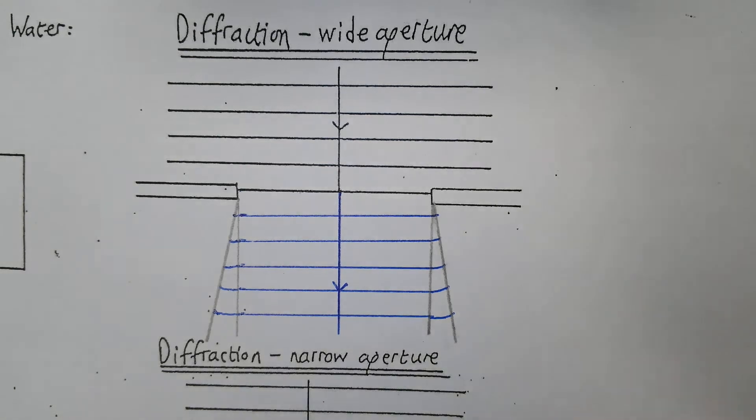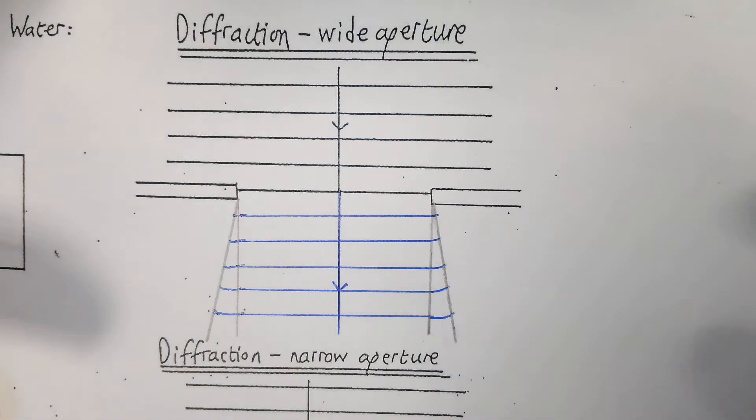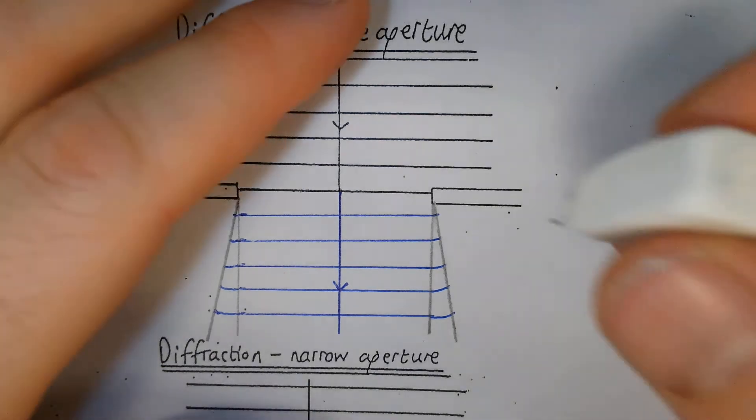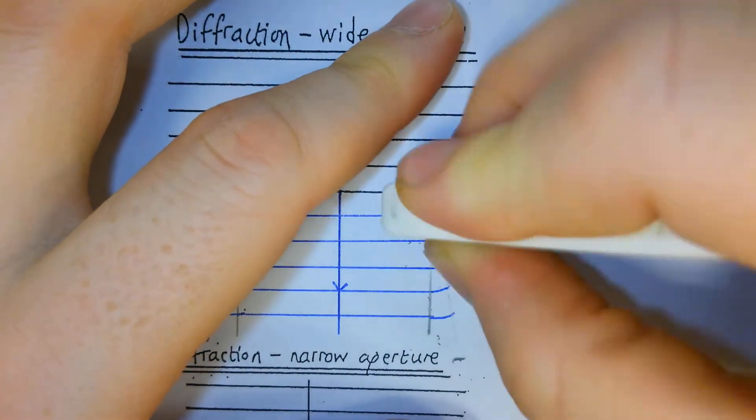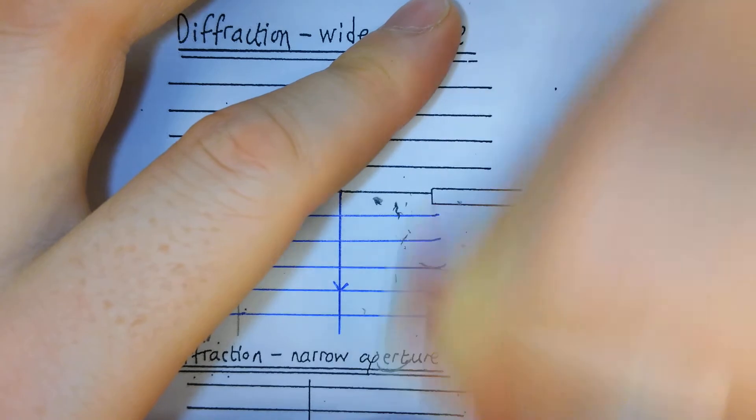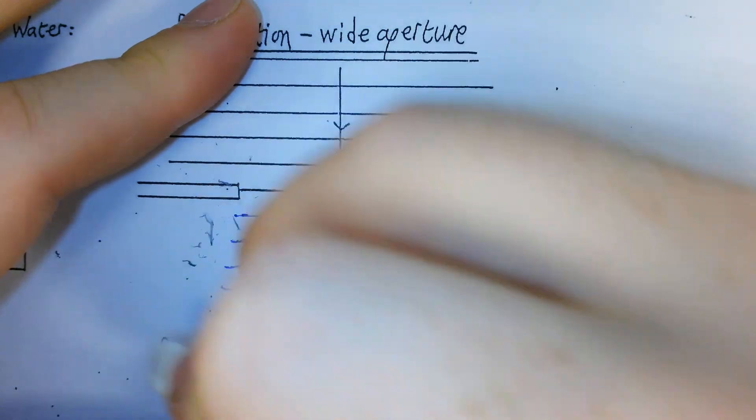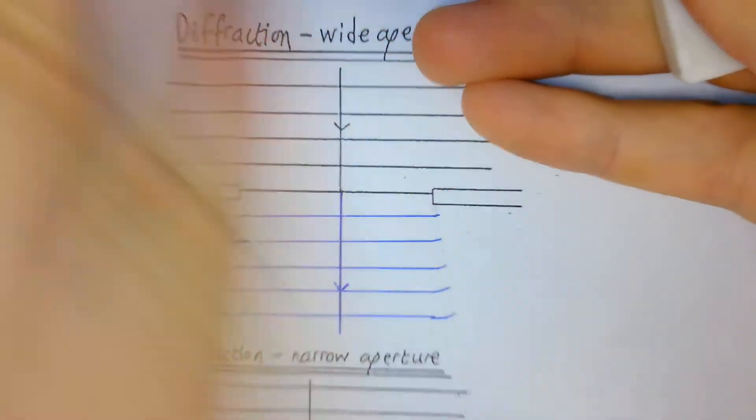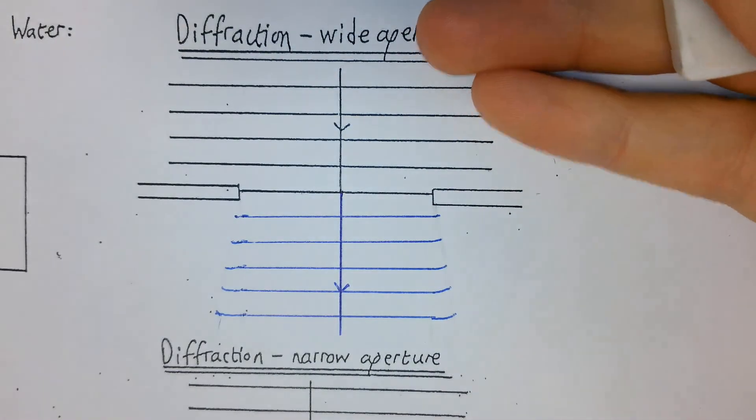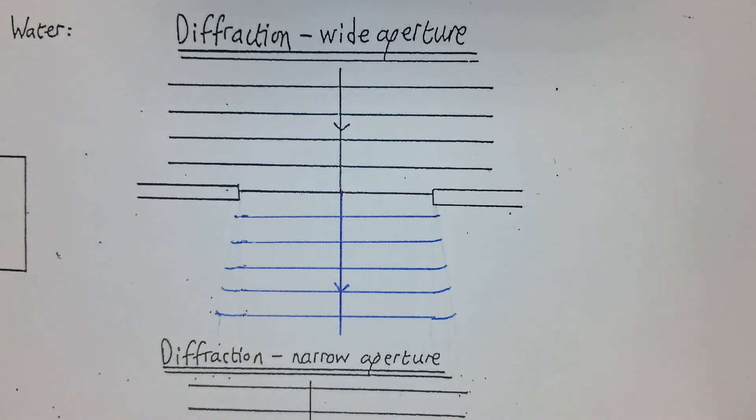Now the last thing I'm going to do, I'm just going to wait a moment to let the ink dry a little bit more. So I'm just going to rub out the construction lines gently. That gives me my nice diagram showing diffraction through the wide aperture.